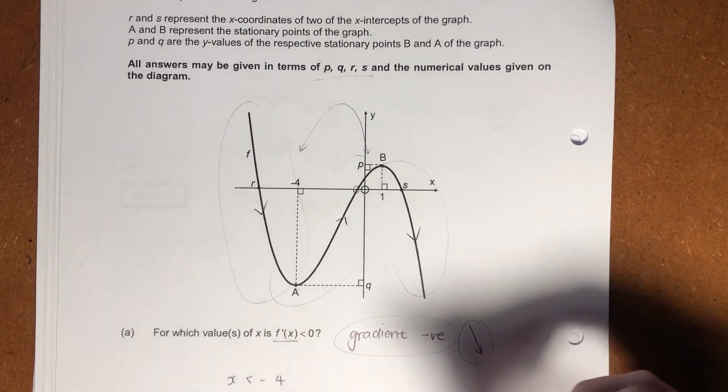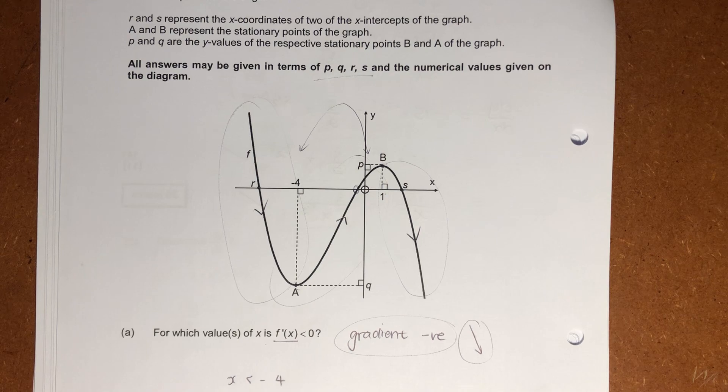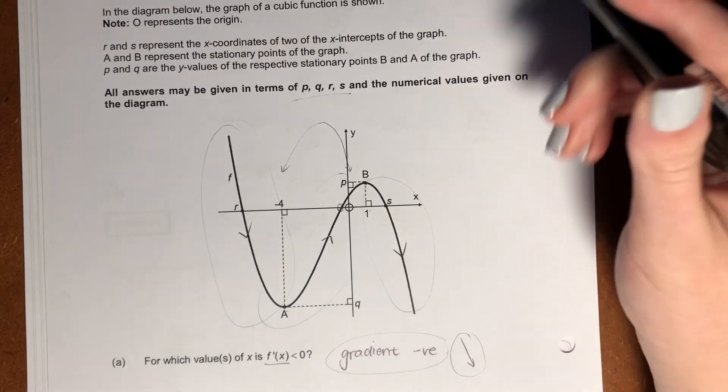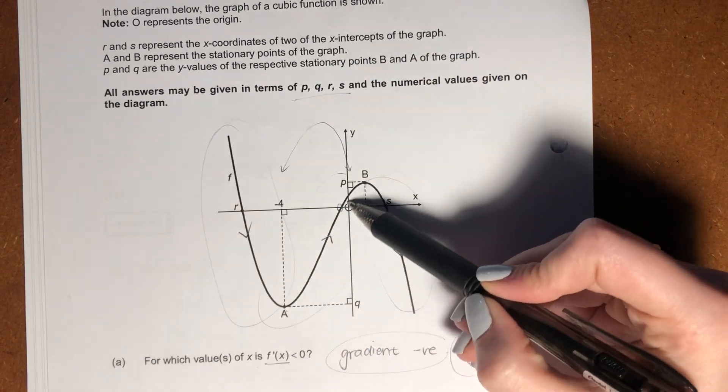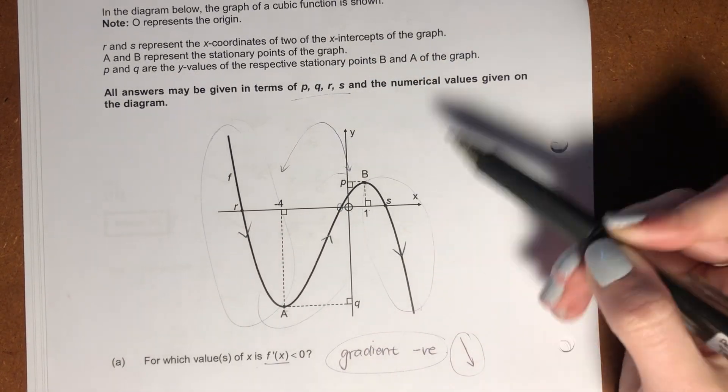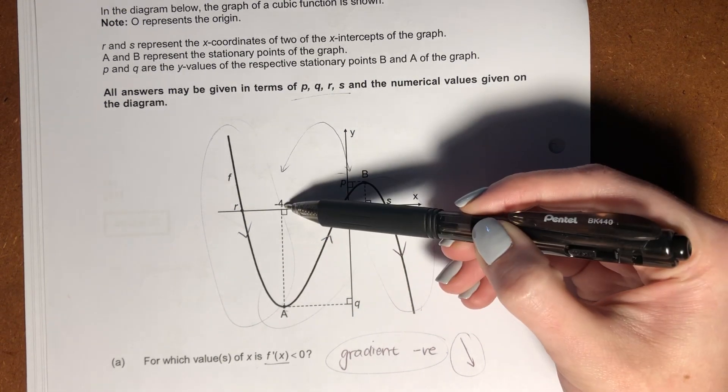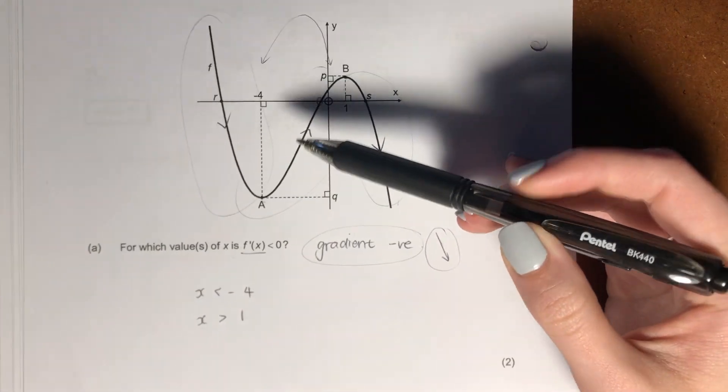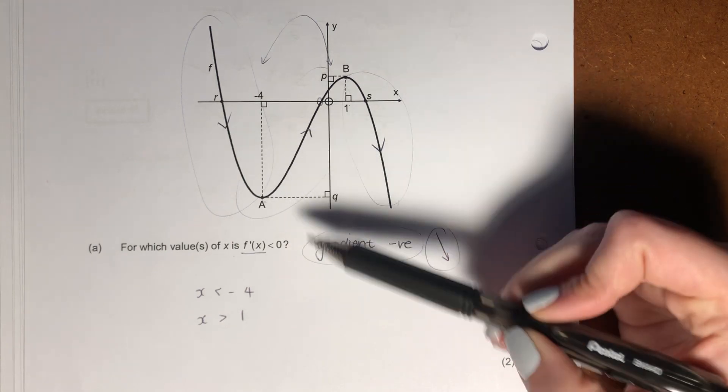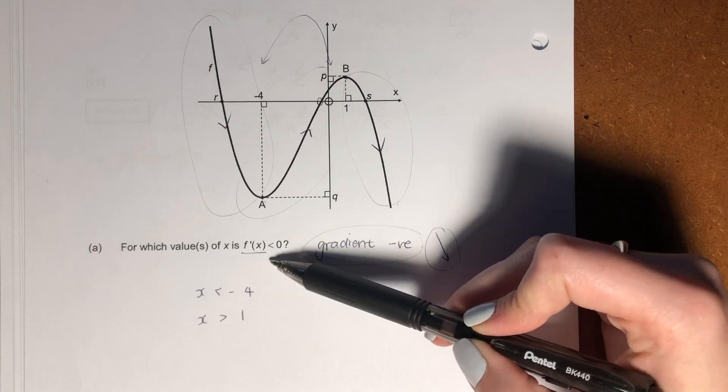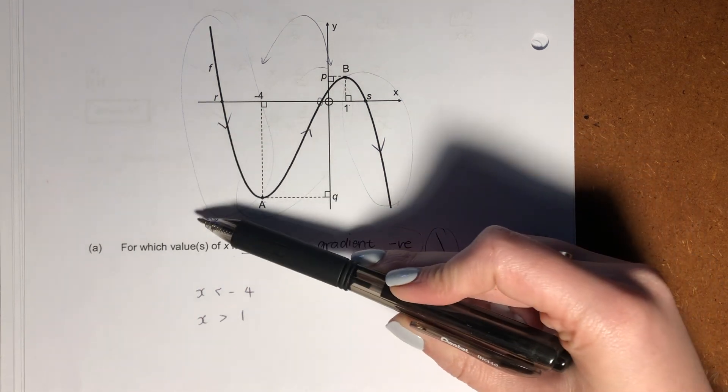And this is what it looks like when we know that a gradient is negative, visually. So what I've done is I've drawn arrows onto this graph to show us. There's a negative gradient. There's a positive gradient. There's a negative gradient. So our negative gradient is anything where x is smaller than negative 4. It doesn't include 4. Why? Because at 4, it equals 0. Are we allowed to include 0 as part of our question? No.